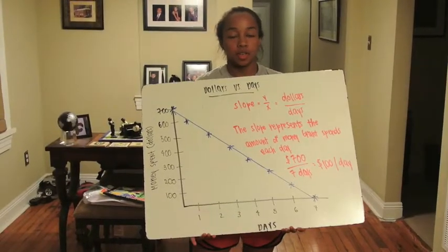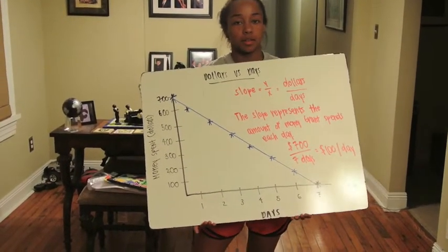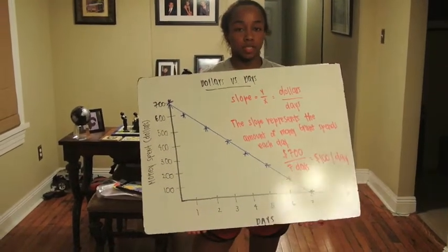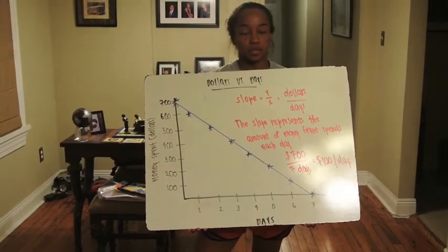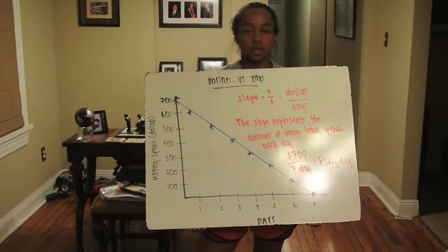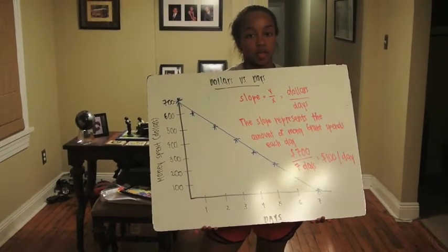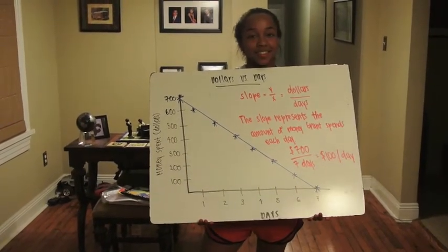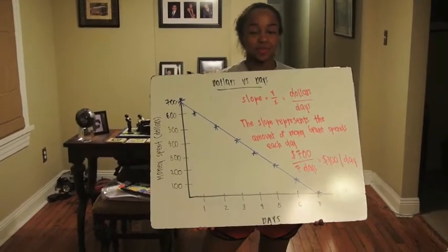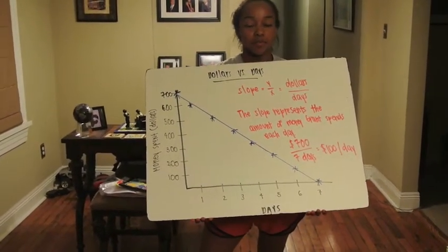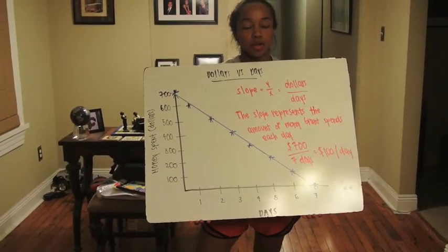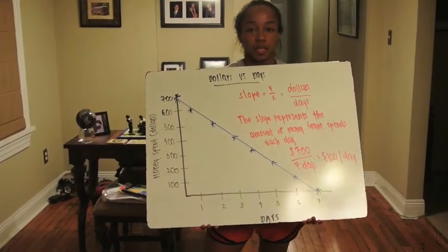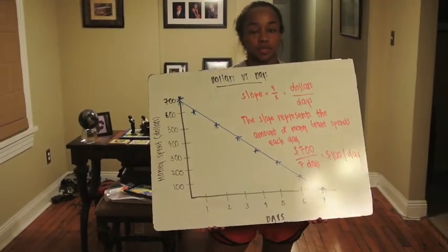In order to make sure that Grant doesn't run out of money at the end of his trip, he plans on spending the same amount each day. The slope represents the amount of money that Grant will spend each day while on his trip. In order to calculate the slope, divide the amount of money that Grant started out with, which is $700, by the number of days he will be on his trip, which is 7.